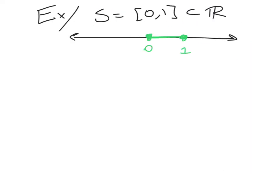As an example, consider the set [0,1], including the endpoints, as a subset of the real line. This is not an open set. Why not?